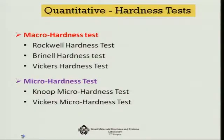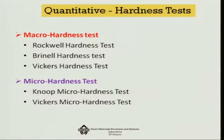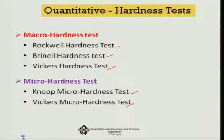At a later stage, quantitative hardness tests evolved, and there are basically two classifications. One is called the macro hardness test, where not much sample preparation is needed, and the other is called the micro hardness test. In the macro hardness test we have chosen the Rockwell hardness test, Brinell hardness test, and Vickers hardness test. In total, these five experiments allow one to quantitatively find out the value of hardness.